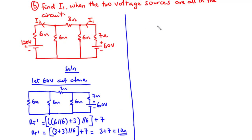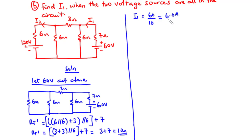To find the value of I1, we divide the voltage source value by RT'. So I1 = 60 / 10 = 6.0 amperes. This is the total current produced by the 60 volt source when it is acting alone.